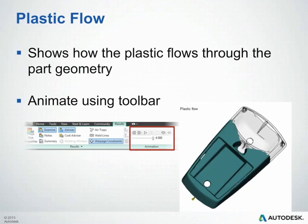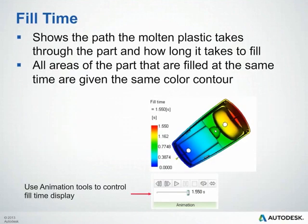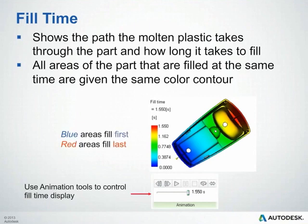After running a fill analysis, you'll also receive a Plastic Flow plot showing how the plastic flows through the part geometry, which you can animate within the toolbar. You'll also receive a Fill Time plot showing the path the plastic takes and how long it takes to get there. Areas filled at the same time are given the same color contour — blue areas fill first, red areas fill last. This is useful for animating and seeing how your part fills, whether the outer extremities fill at the same time, and whether you have balanced flow.